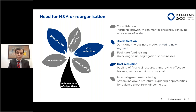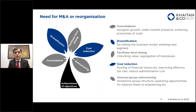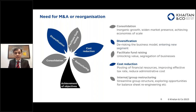There are multiple objectives for which a corporate group may consider an M&A or reorganization. The most common reason is consolidation of business — to achieve inorganic growth, increase market presence, or achieve business synergies. Take the example of the Vodafone-Idea merger, which was done to increase the market share of the combined entity. As we all know, that transaction was consummated through a scheme of arrangement where one entity was merged as part of the scheme process.